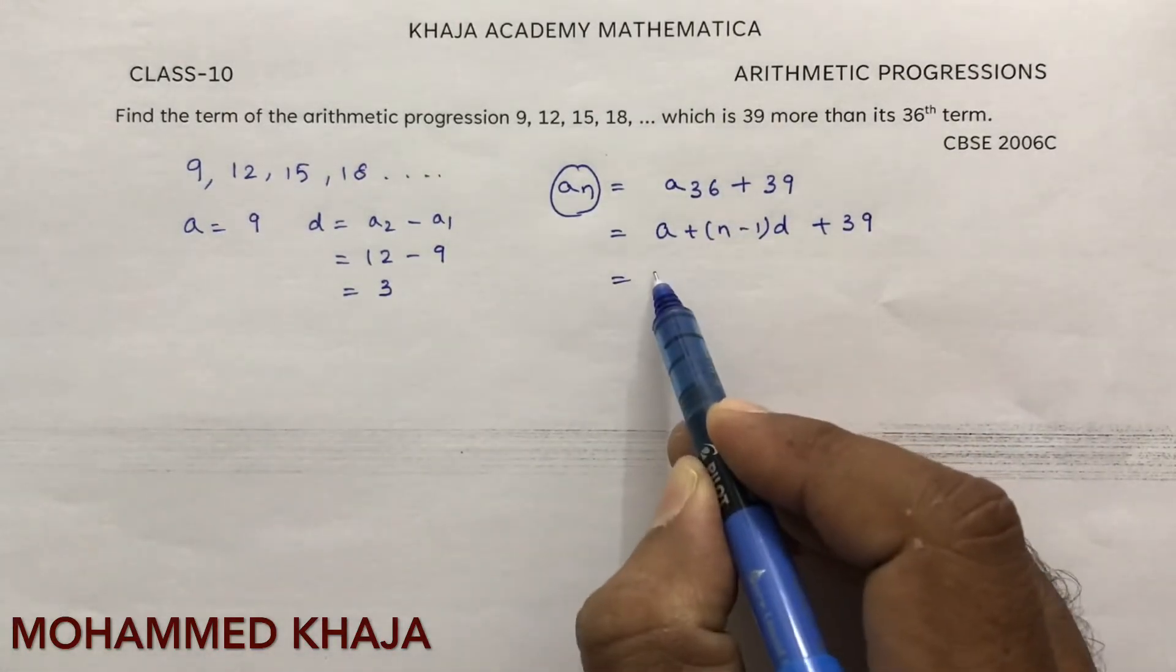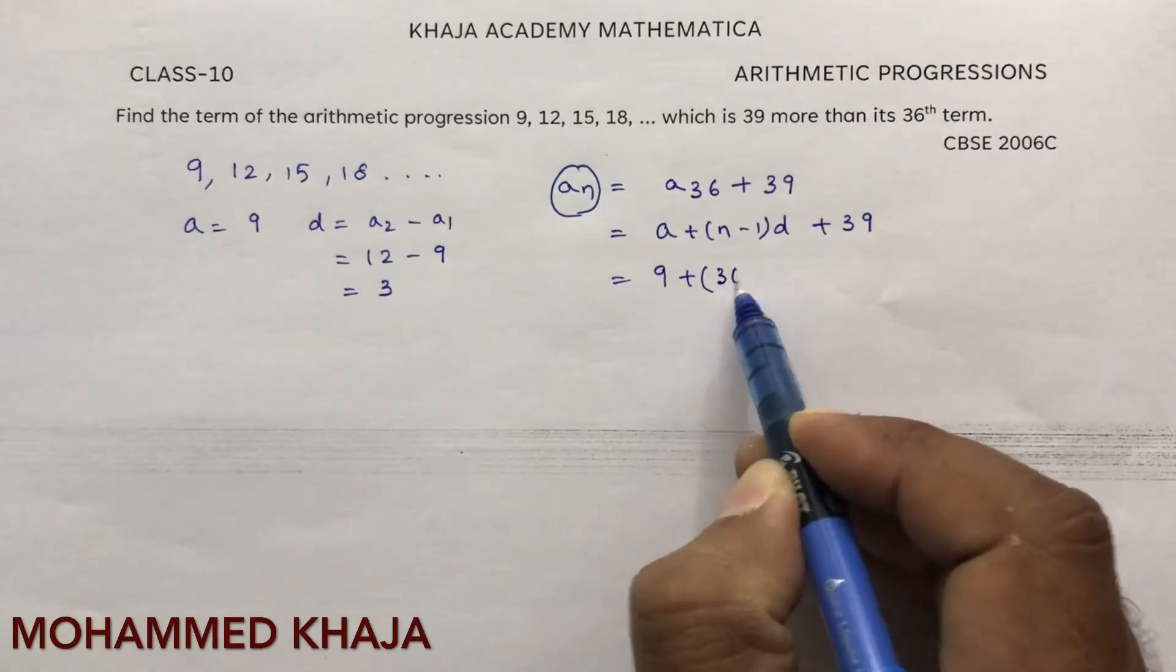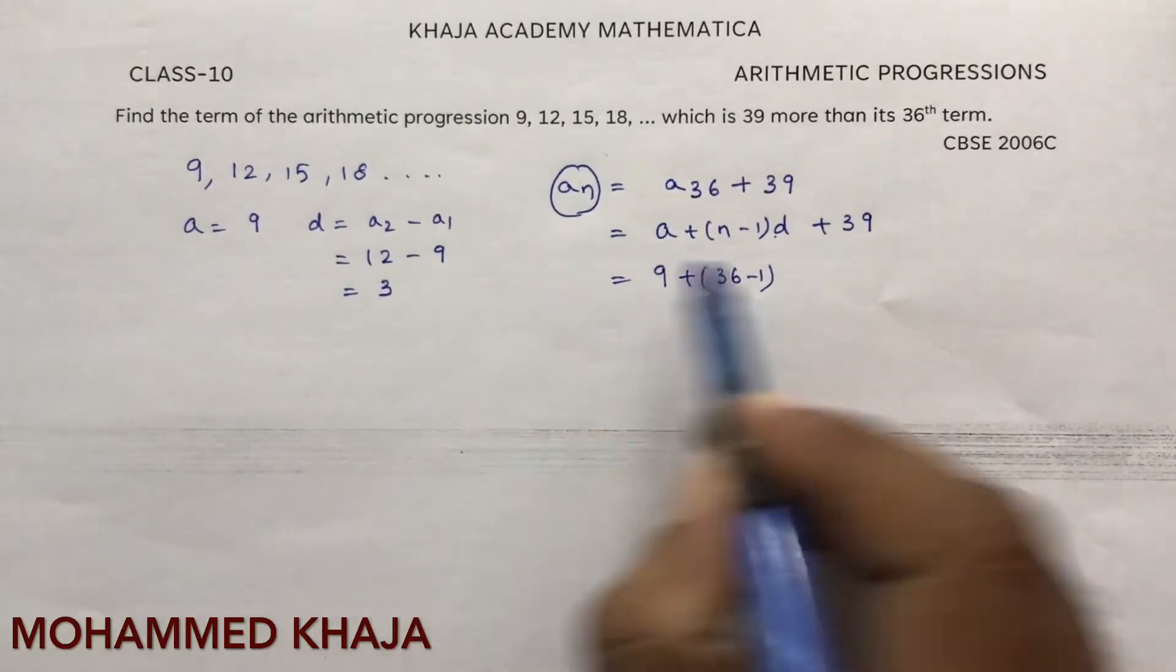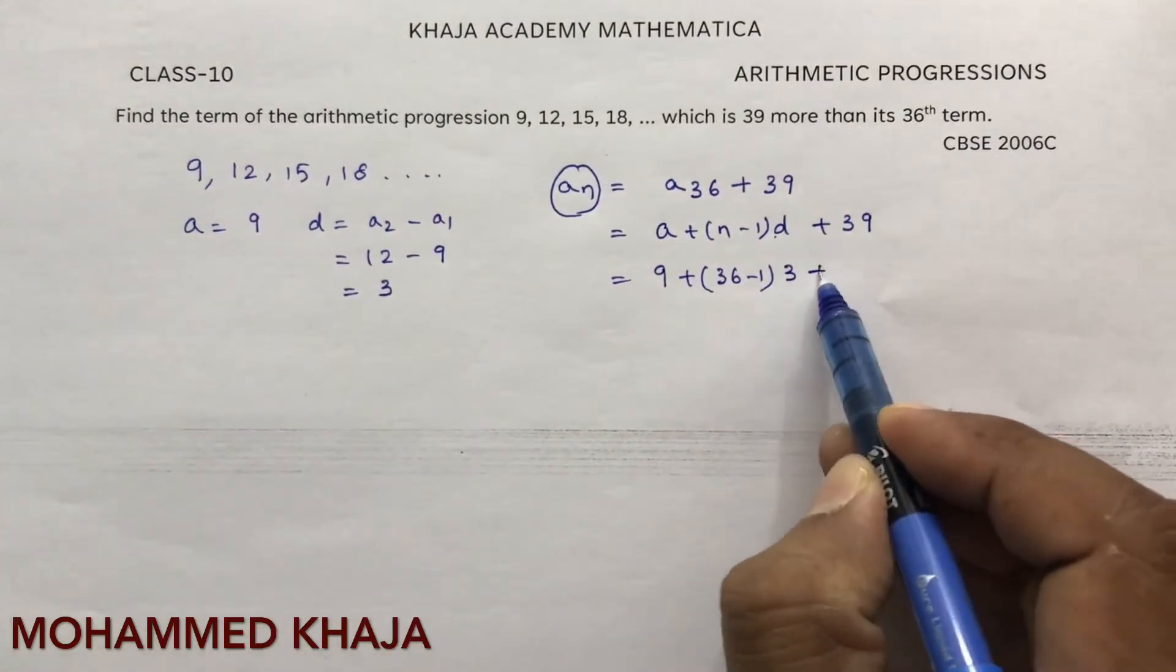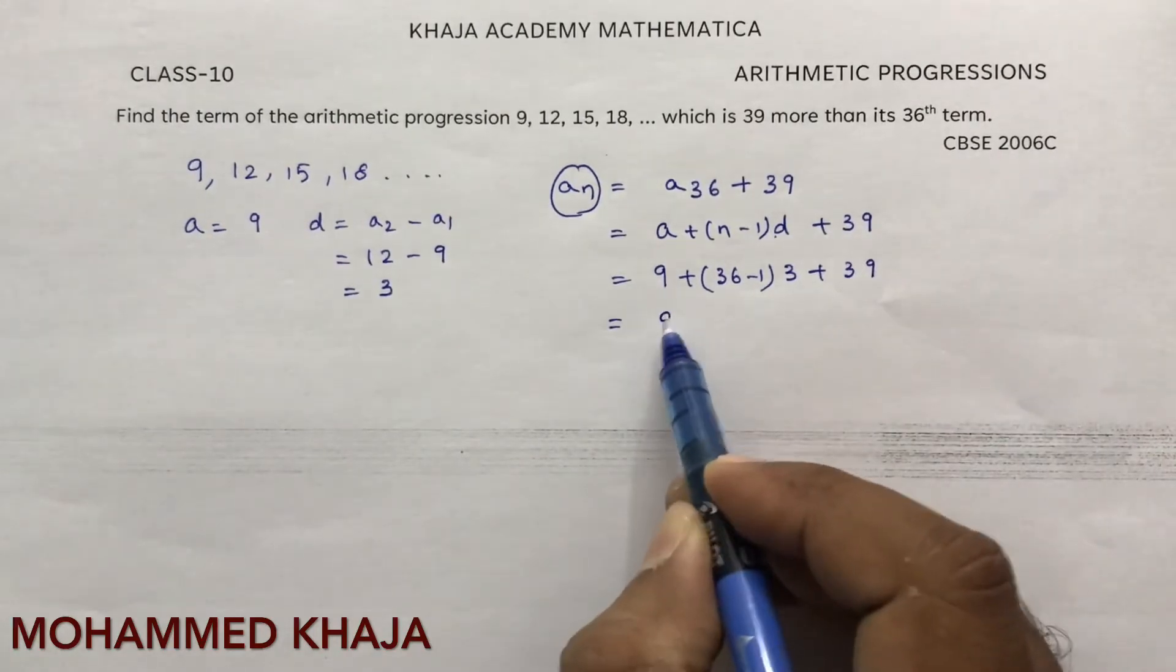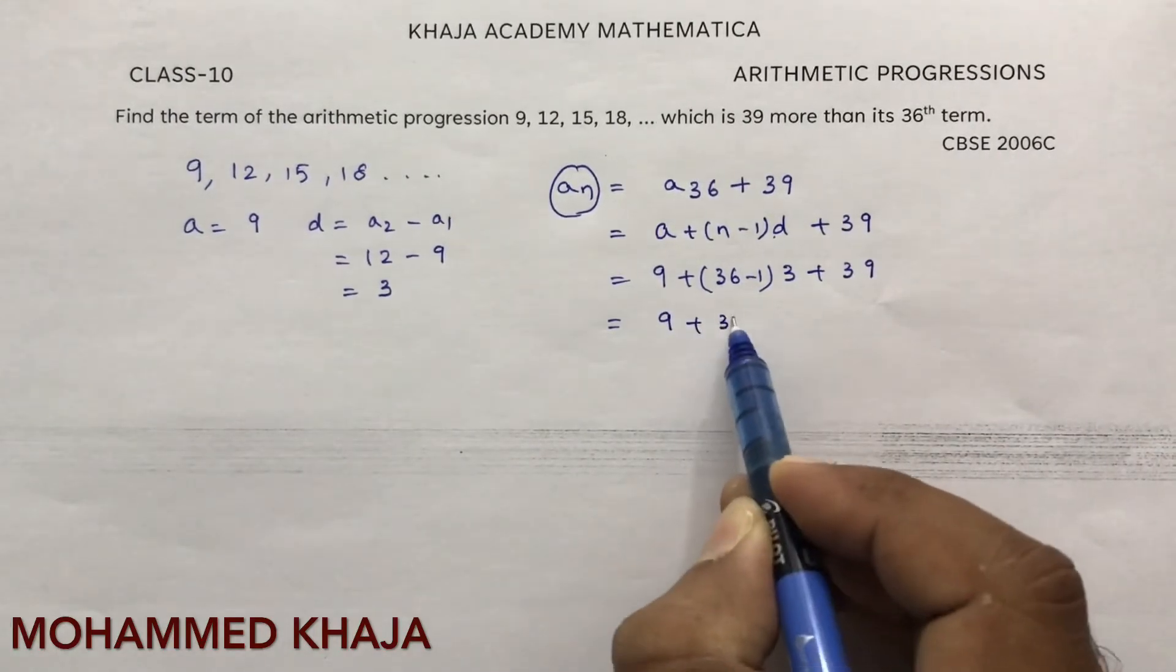Here a is 9, n is 36, and d is 3. So we have 9 plus 36 minus 1 into 3 plus 39, which is 9 plus 35 times 3 plus 39.